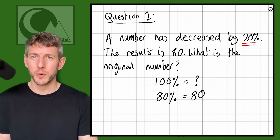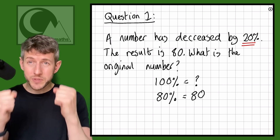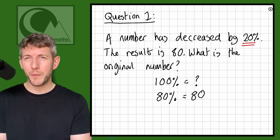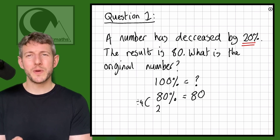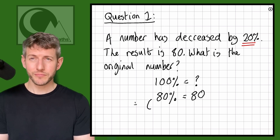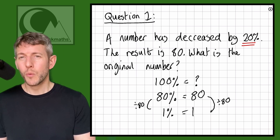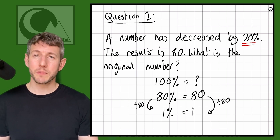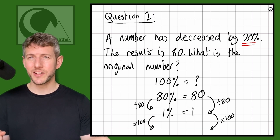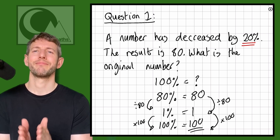So 80% equals 80. To get down to 1%, we divide both by 80: 80% divided by 80 gives us 1%, and 80 divided by 80 gives us 1. So we know that 1% equals 1. Now we multiply both by 100: that gives us 100% equals 100. So the original number was 100.